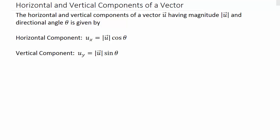Alright, so this video we're going to talk about finding the horizontal and vertical components of a vector. The horizontal and vertical components of some vector u with magnitude and direction is given by the horizontal component.